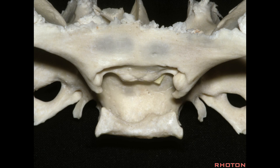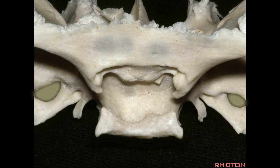That prominent structure is the middle clinoid, which can sometimes ossify over to the anterior clinoid and complete a bony ring around the carotid at the roof of the cavernous sinus. Laterally we're looking at foramen ovale in the roof of the infratemporal fossa.